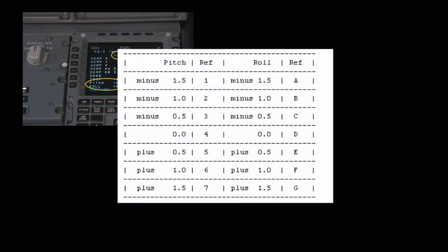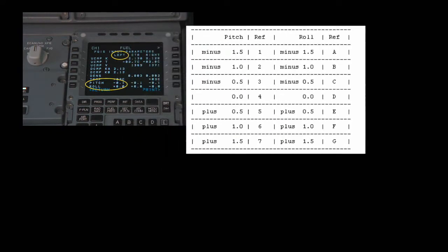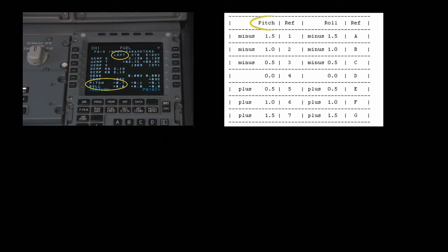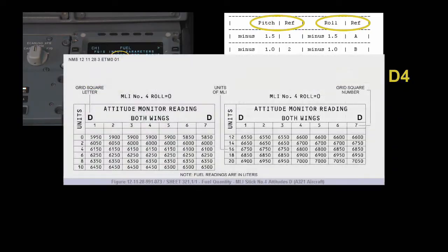Refer to the table in the Aircraft Maintenance Manual to find the equivalent reference number and letter. Use the number and letter to identify the square to use in the MLI procedure. Use the applicable MLI stick number and the applicable aircraft attitude grid square letter to find the correct fuel quantity table in the Aircraft Maintenance Manual.